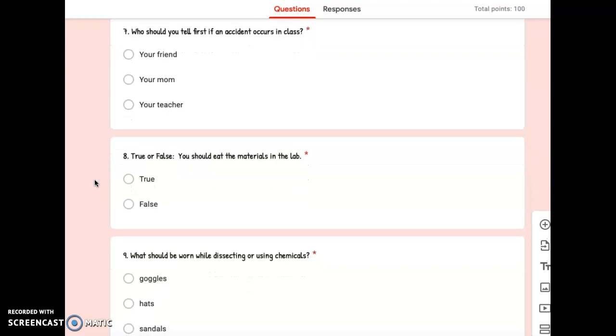Number seven: Who should you tell first if an accident occurs in class? Your friend, your mom, or your teacher.